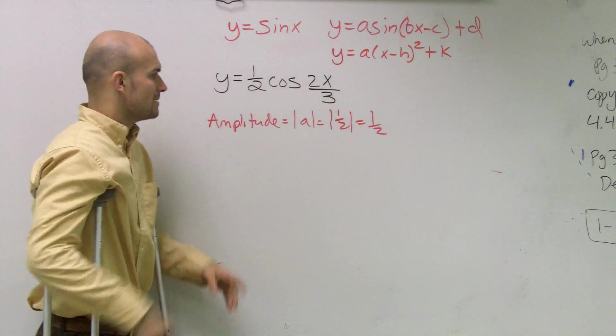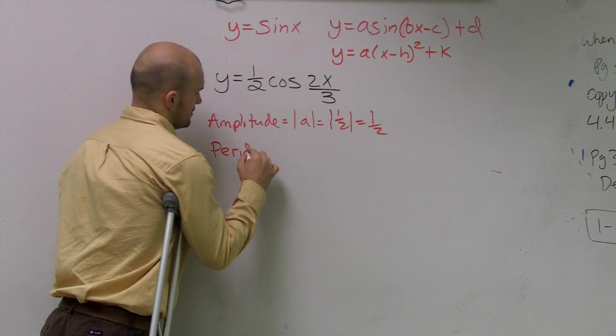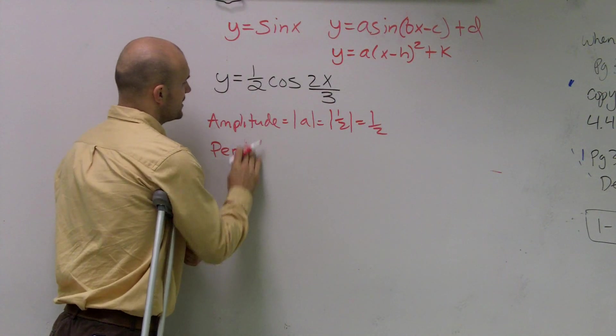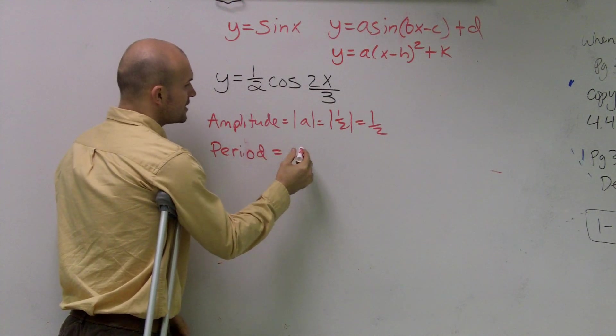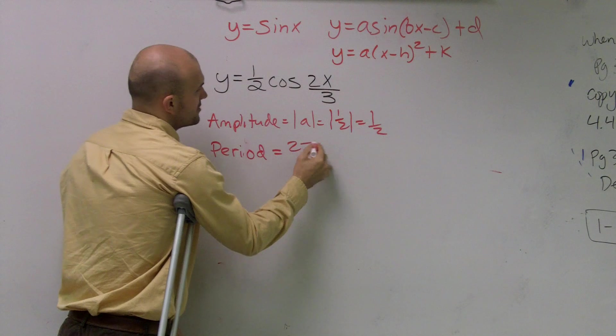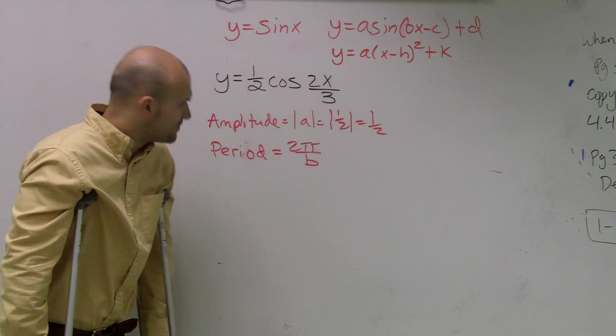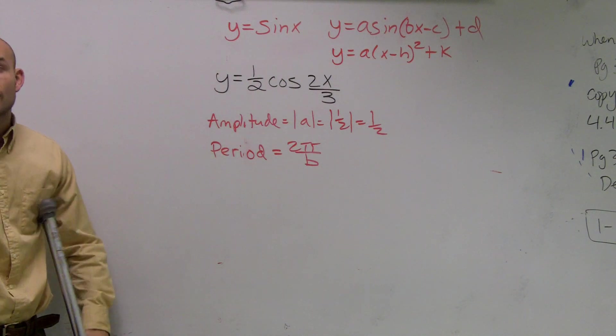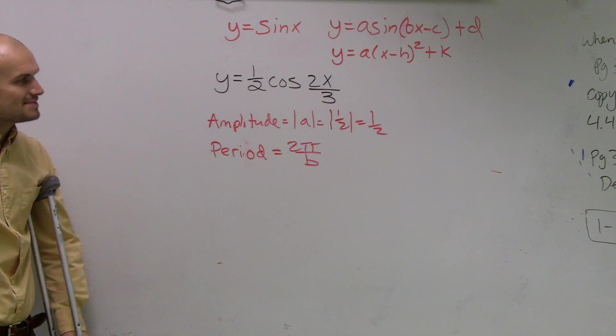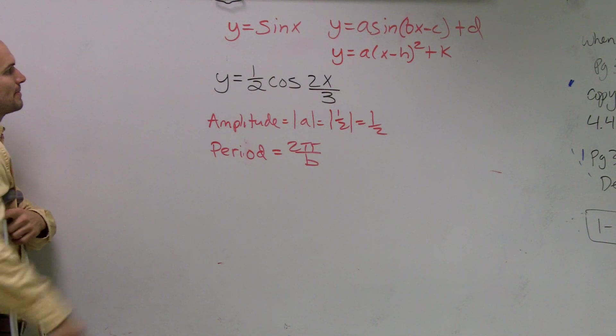So then, the next one is going to be working on period. Now, period can get a little difficult if we're not set up with our algebra skills, because we need to remember a couple things. The period is 2π over b. So b is our number that's in front over the x. And ladies and gentlemen, please make sure you pay attention with this, because this is going to get a lot of students tricked up.